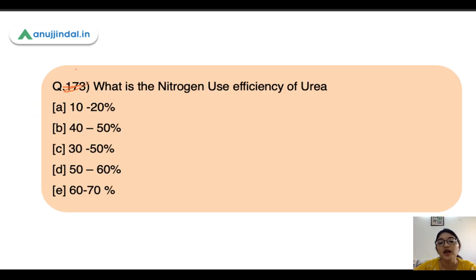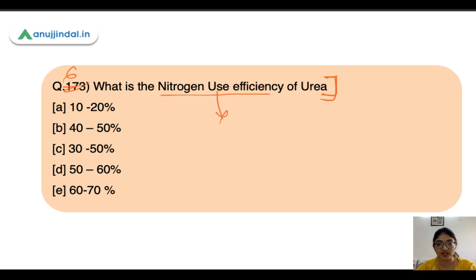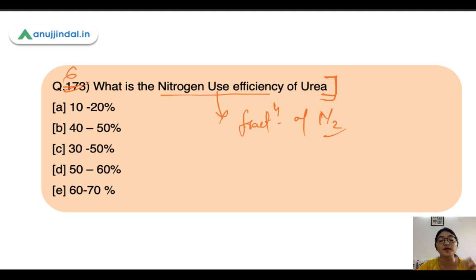Question number 6: what is the nitrogen use efficiency of urea? Urea is the most widespread fertilizer used in Indian agriculture because Indian soils are poor in nitrogen. Nitrogen use efficiency is the fraction of nitrogen that the plant actually absorbs and utilizes from the applied fertilizer. The nitrogen use efficiency of urea varies from 30 to 50%.